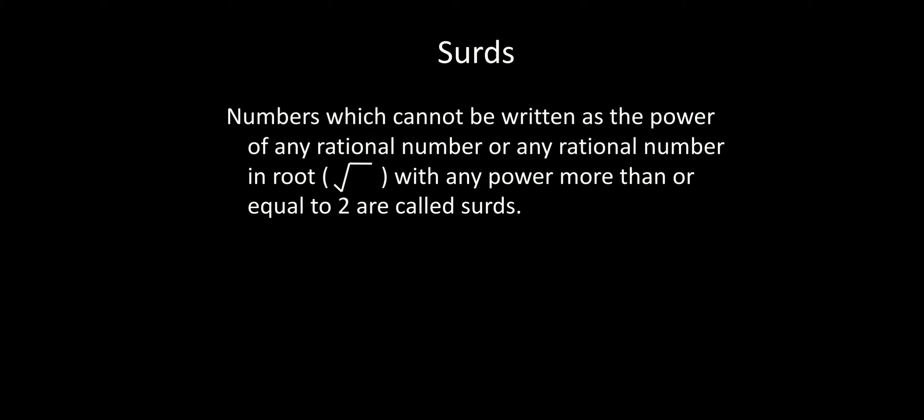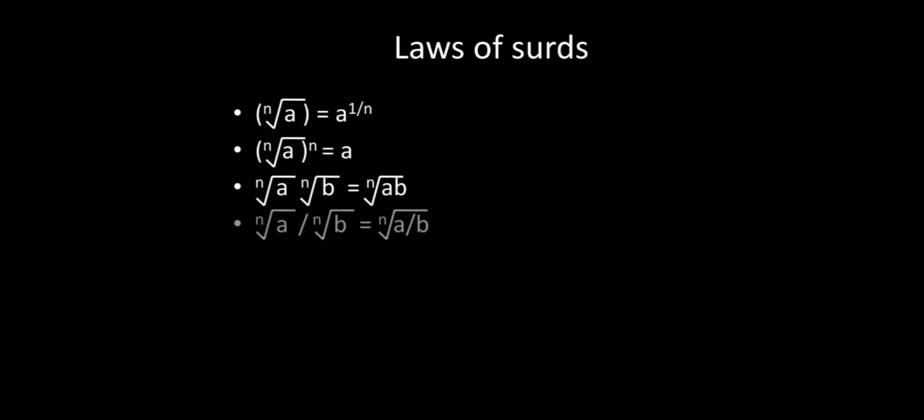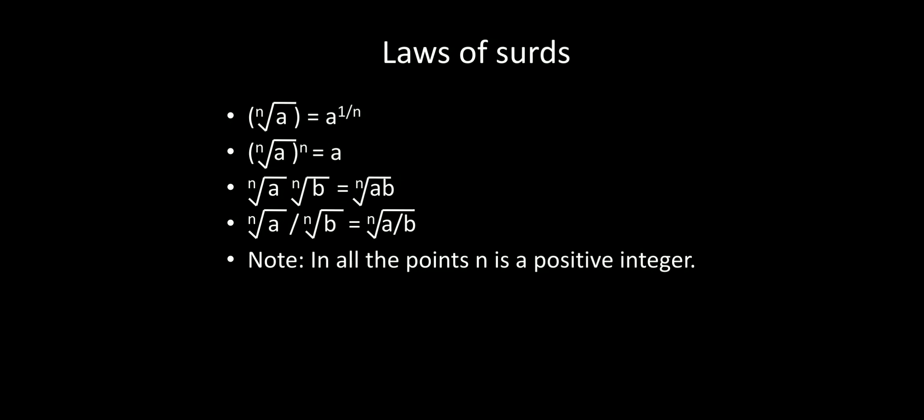Now the laws of surds. When you write the nth root of a, where n is a positive integer, it can also be written as a to the power 1/n. Similarly, the nth root of a to the power n equals a, because n divided by n cancels. When the base is different but the power is the same, you can multiply or divide them as given in the rules.